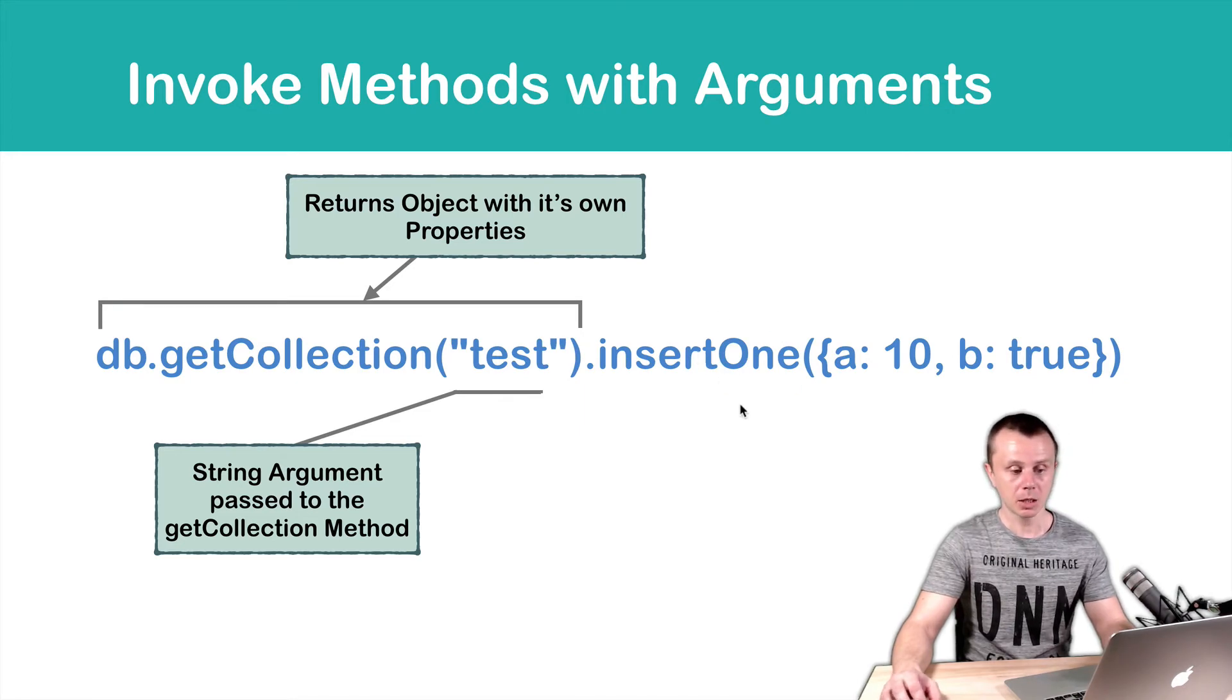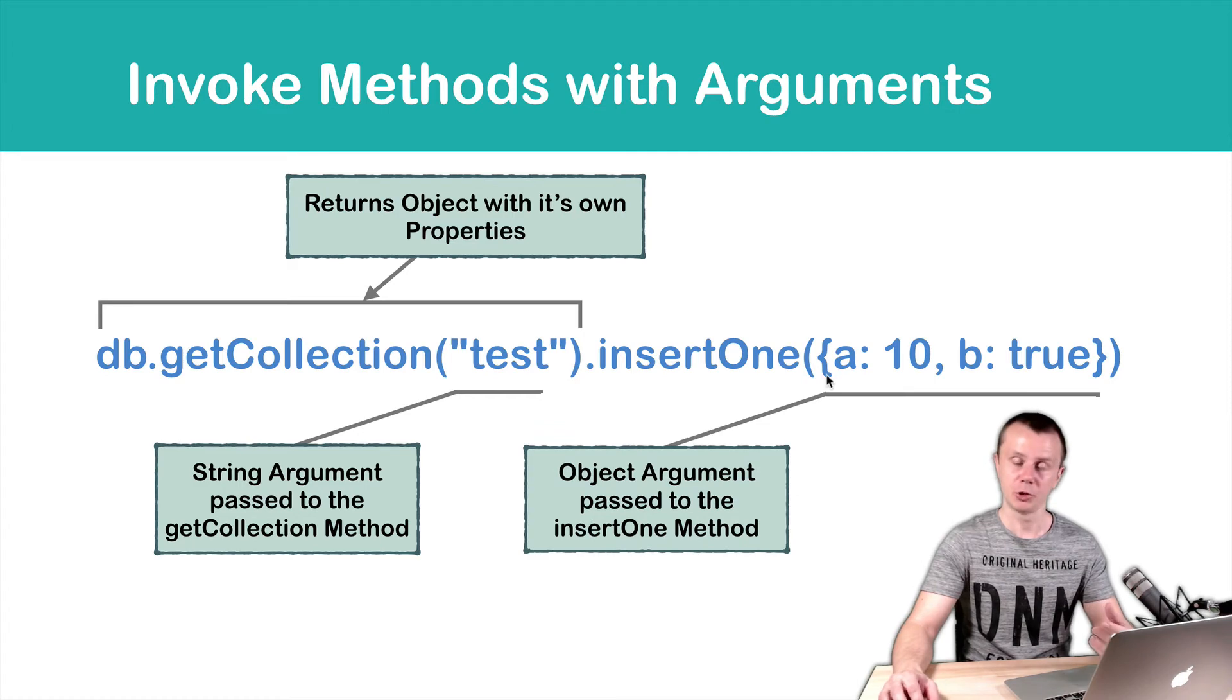This insertOne method also requires an argument, and in this case we pass an object as an argument. So we execute the insertOne method here because we see parentheses, but we execute it with an argument. The argument in this case is an object with two key-value pairs.